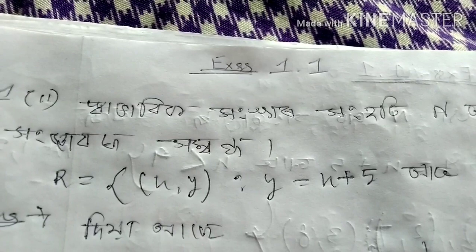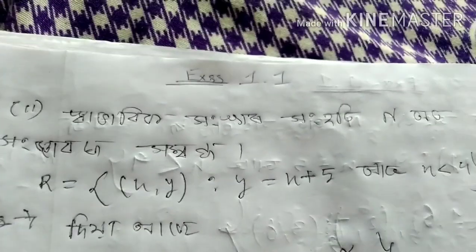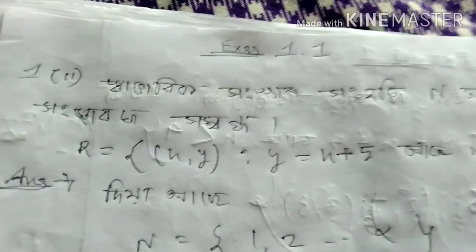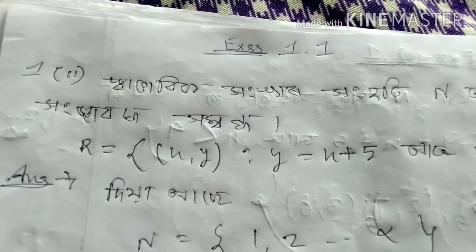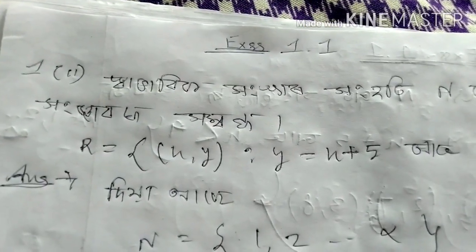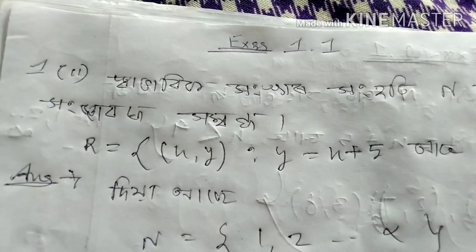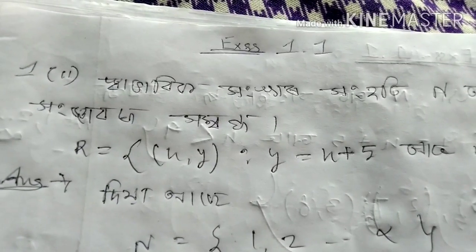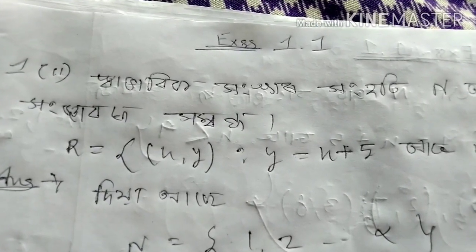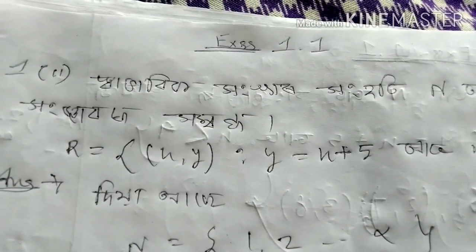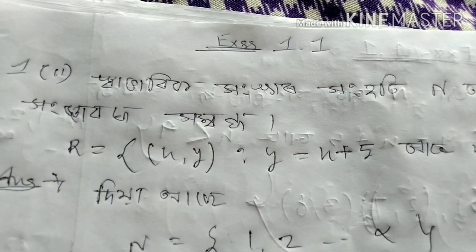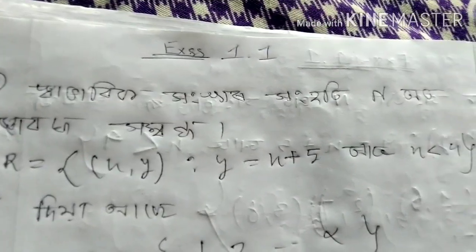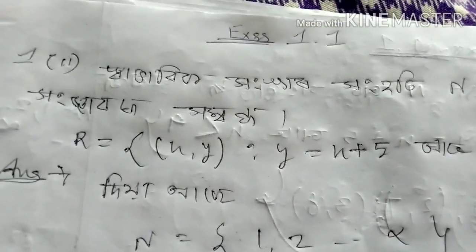The question is: y is equal to x plus 5, for x less than 4.